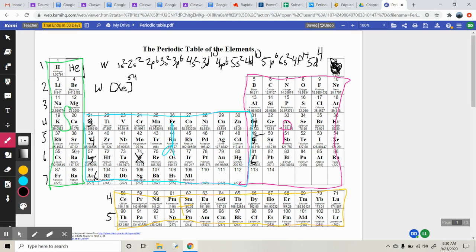So now we're at xenon. So now we'll go, starting from there, we'll go 6S2. We'll go 4F14. And then we'll go 5D, 1, 2, 3, 4, 5D4. And then if I asked you how many valence electrons are in tungsten, you would say 2.